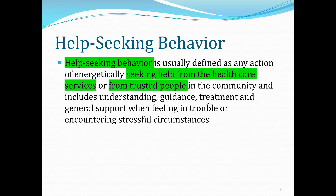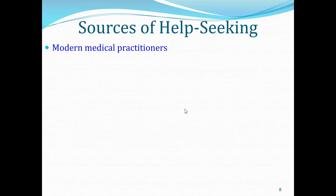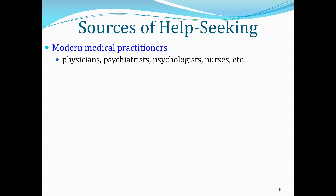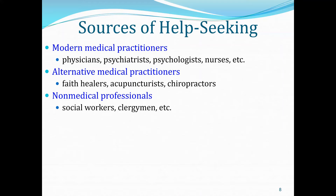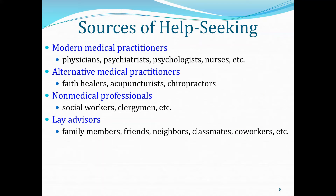What can be sources of help-seeking? It could be modern medical practitioners such as physicians, psychiatrists, psychologists, nurses, etc. It can be alternative medical practitioners including faith healers, acupuncturists, and chiropractors. It can be non-medical professionals such as social workers and clergymen. Or they can be lay advisors like family members, friends, neighbors, classmates, co-workers, etc. There are also other sources such as self-care, the internet, and a combination of these sources.